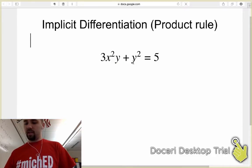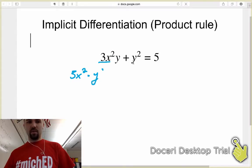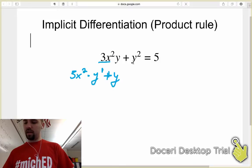So what this will look like when you take the derivative is it will be the first, which is 3x², times the derivative of the second. The derivative of the second is y' or dy/dx. You can write either one. And then we'll go plus the second, which is y, times the derivative of the first, and that's 6x.